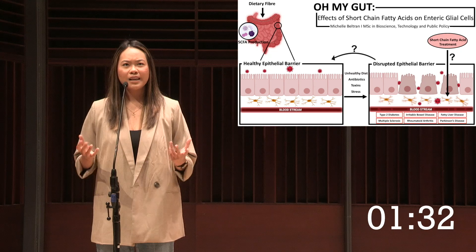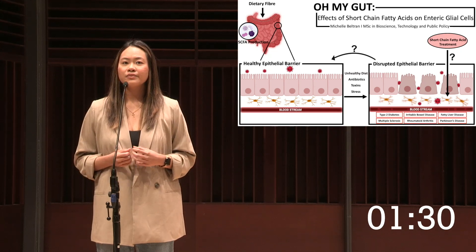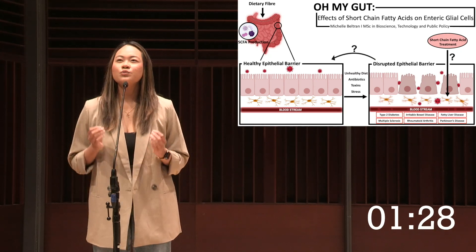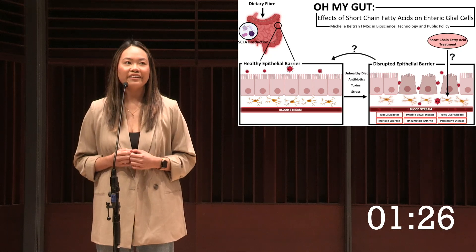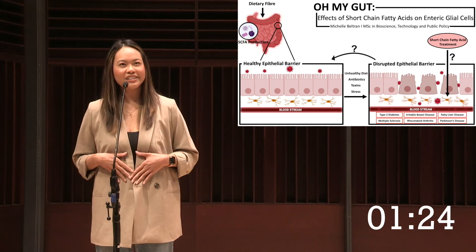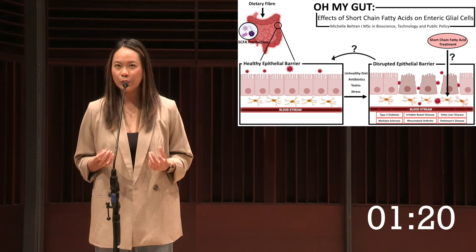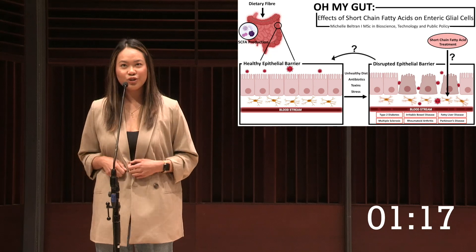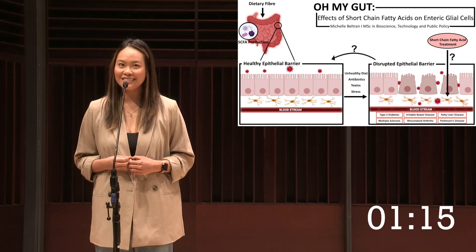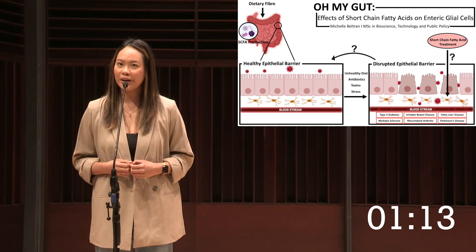So the question is, how do we prevent this? Diet is emerging as one of the leading influencers of a healthy gut. When we eat dietary fibers from foods such as fruits, vegetables, nuts, legumes, and whole grains, our gut bacteria ferments them into nutrients such as short-chain fatty acids, which reinforce the gut barrier.